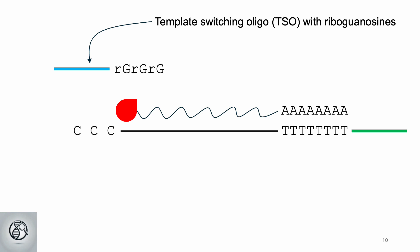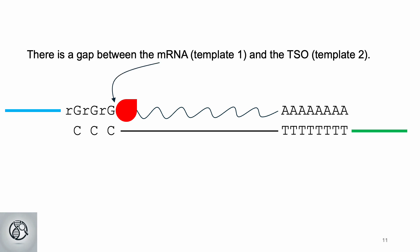TSOs recognize these overhangs, anneal to them, and serve as a new template for RT, as shown here. At this point, it's very important to recognize that there is a gap between the mRNA template 1 and the TSO template 2.